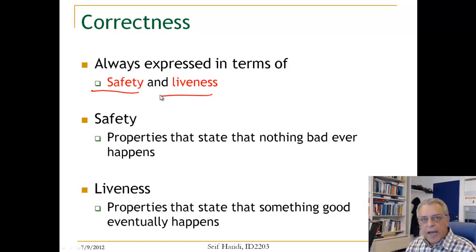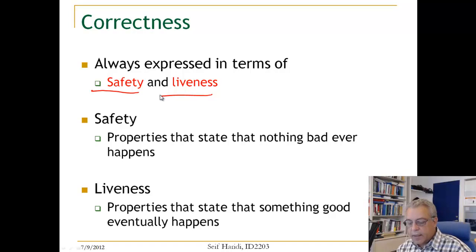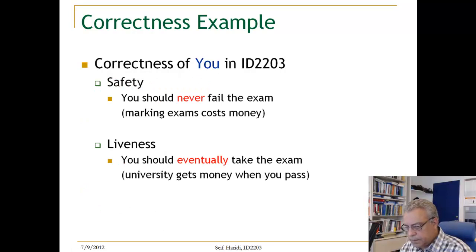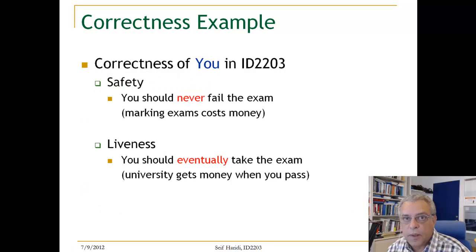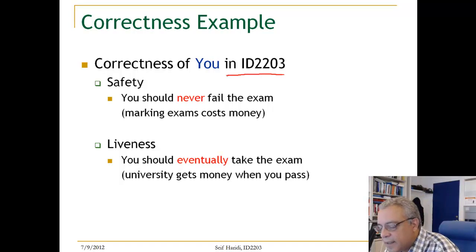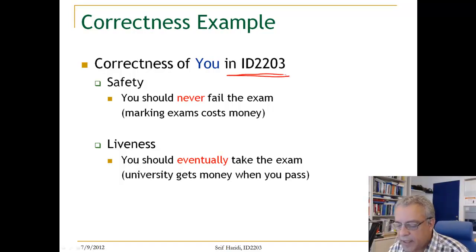A liveness property is a property that states that something good will eventually happen. Here is an example for those studying this course, IE 2203.